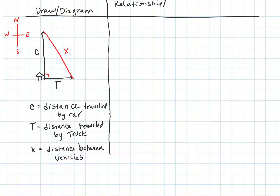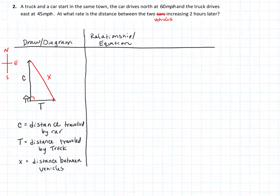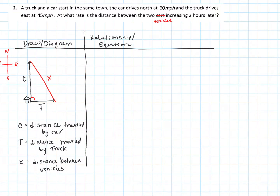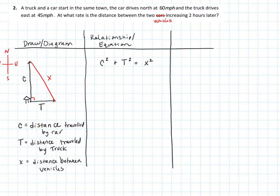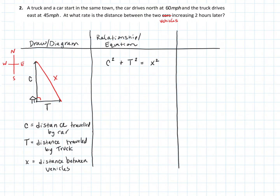We want the mathematical relationship between these variables. The fact that we have a right triangle immediately tells me there's a Pythagorean relationship: C² + T² = X². So that is the relationship between these quantities. The information about speeds and the two-hour mark is also given — and two hours is my snapshot in time.